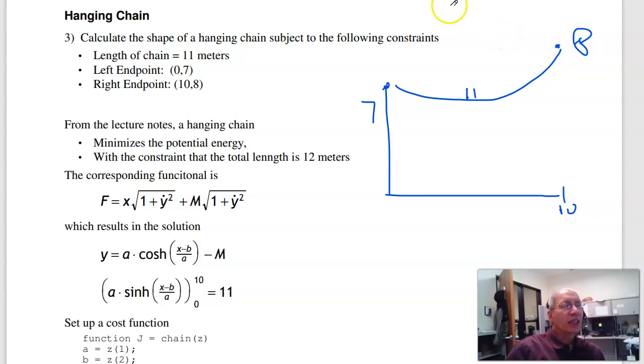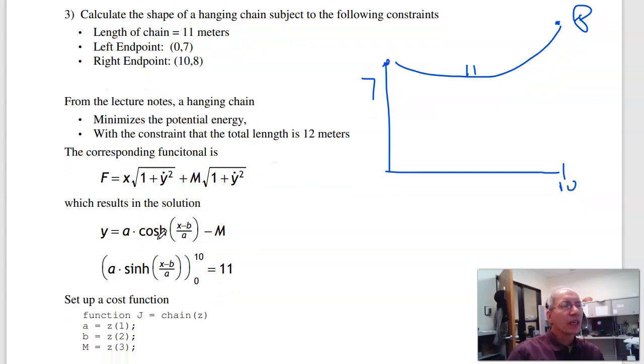If I do that, I'll have to add a Lagrange multiplier. So here is the potential energy actually. This is the length. The length has to be eleven. Throw in a Lagrange multiplier, you get that term. Put it all together, the solution again from the lecture notes will be in this form. Now I've got three unknowns. The left endpoint gives you one unknown, the right endpoint gives you second unknown, and the length of the chain: integrate this and I get that. The total length has to be eleven meters.